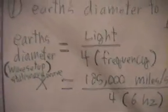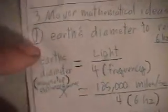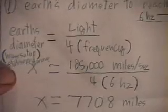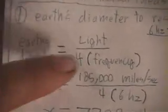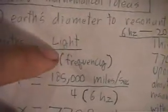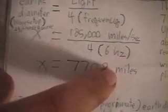Here's one of his equations. He said earth's diameter, or the wave setup, so stationary wave setup, is equal to the speed of light over four times the frequency. I just did a basic calculation: 185,000 miles a second divided by four times six hertz, and six hertz being the lowest frequency that he says in the patent.